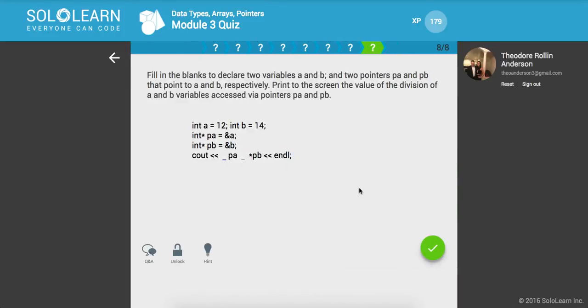Fill the blanks to declare two variables a and b and two pointers pa and pb that point to a and b respectively. Print to the screen the value of the division of a and b variables accessed via pointers pa and pb. Okay. So let's grab a pa and division pb. Awesome.